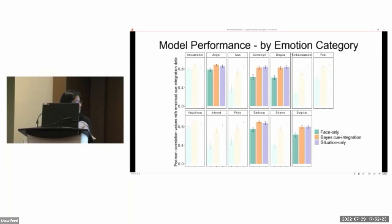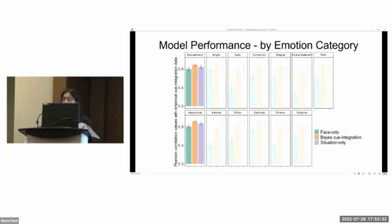However, the situation-only model did not differ from the cue-integration model for categories of anger, contempt, disgust, sadness, and surprise, and it was significantly lower for categories of amusement and happiness. So when inferring amusement and happiness, people's inferences were best predicted by the cue-integration model.